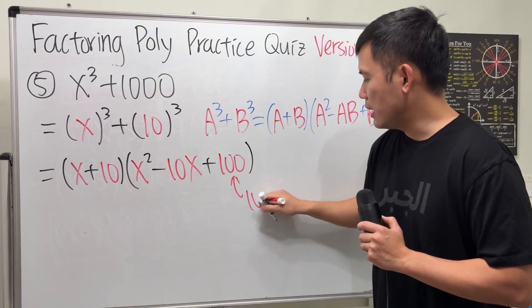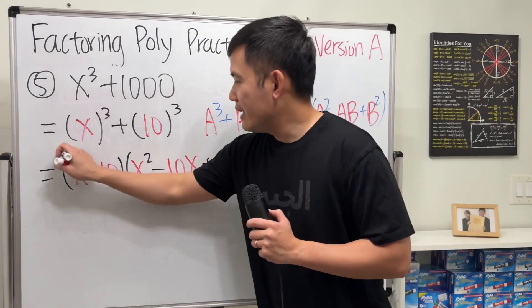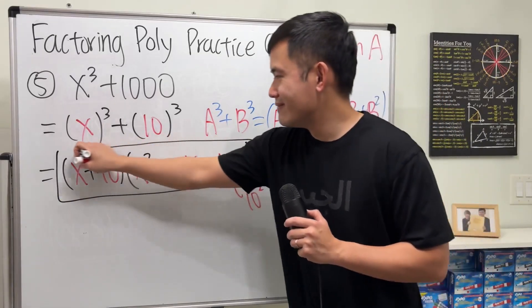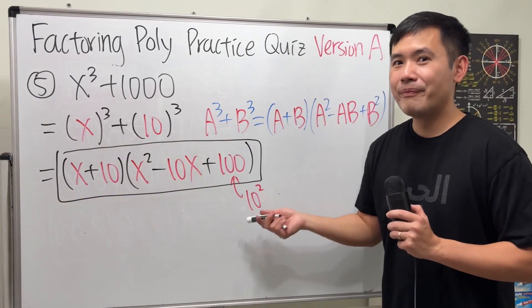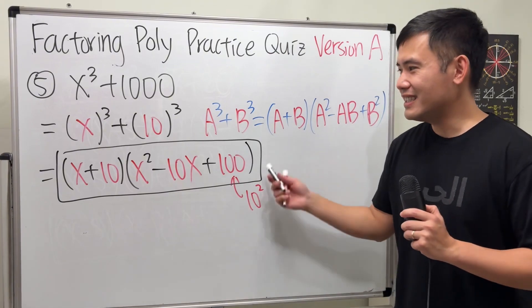And note, this is because 10 squared. And then we are done. Just like this. Let me know how many questions did you get right. That's it.